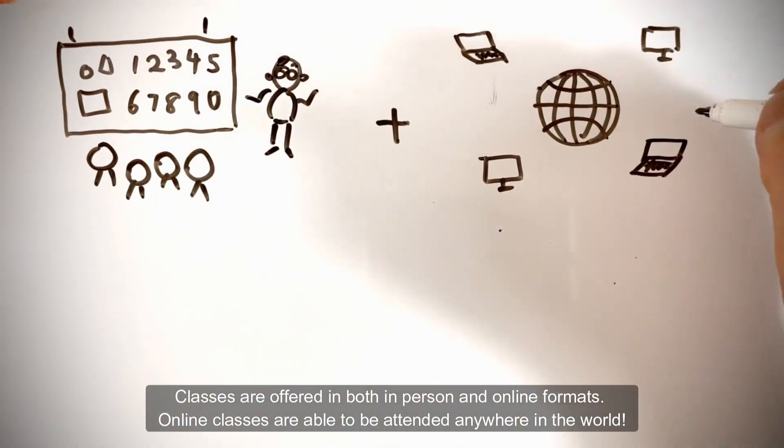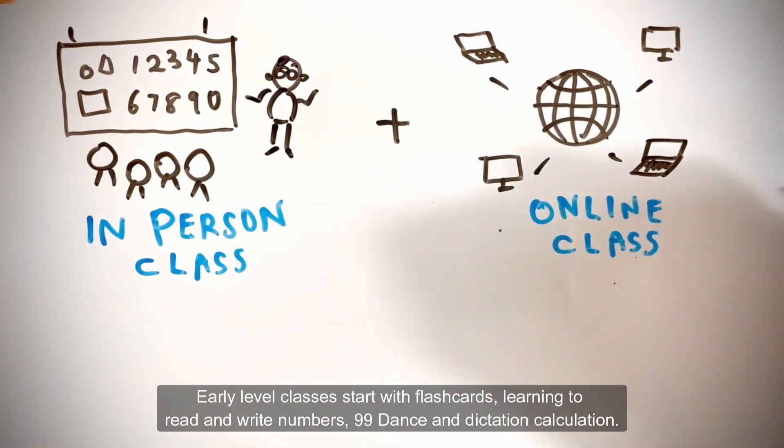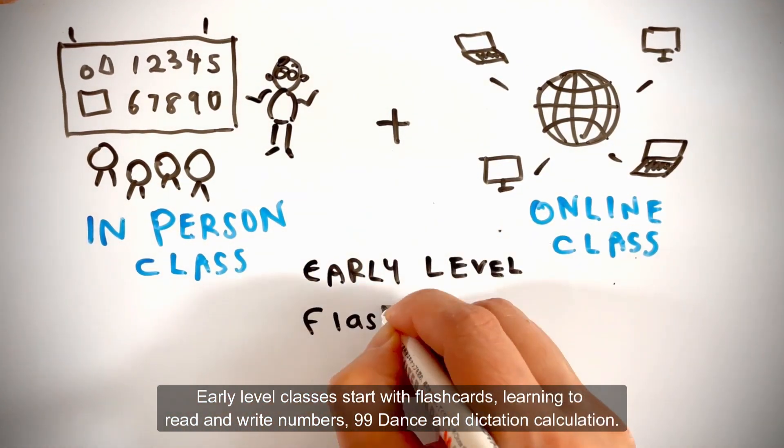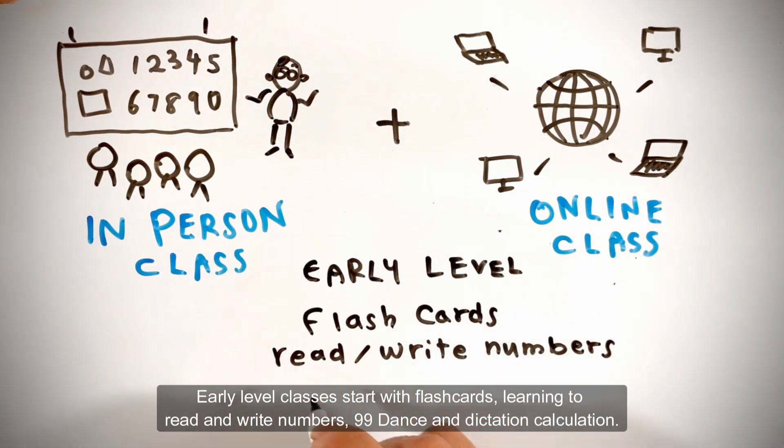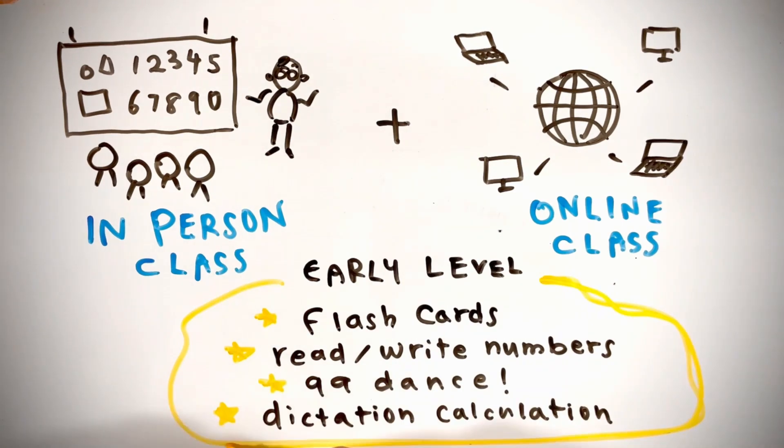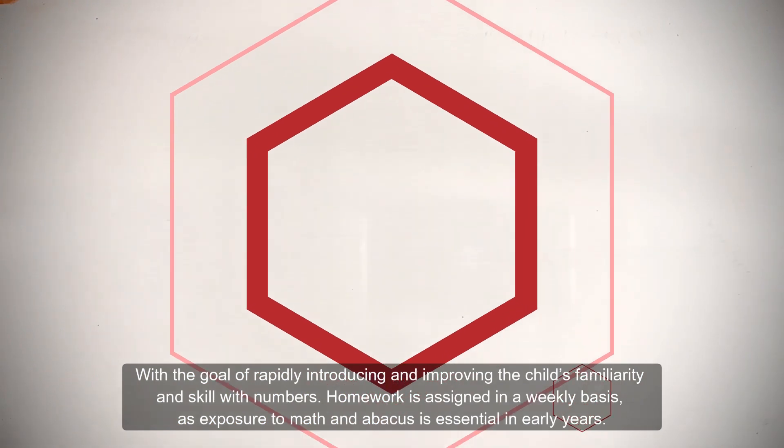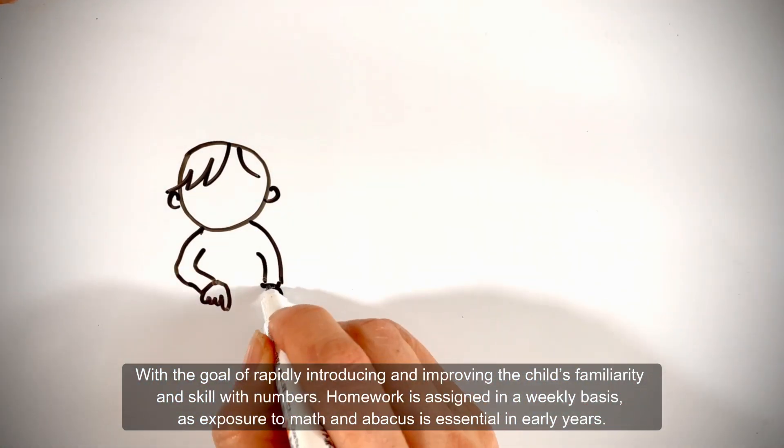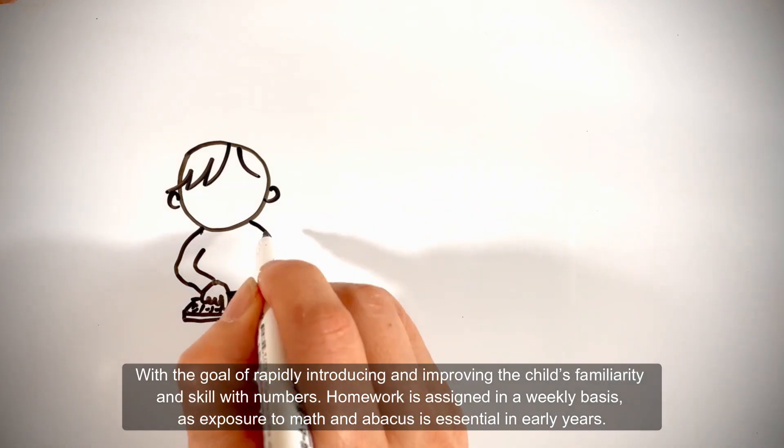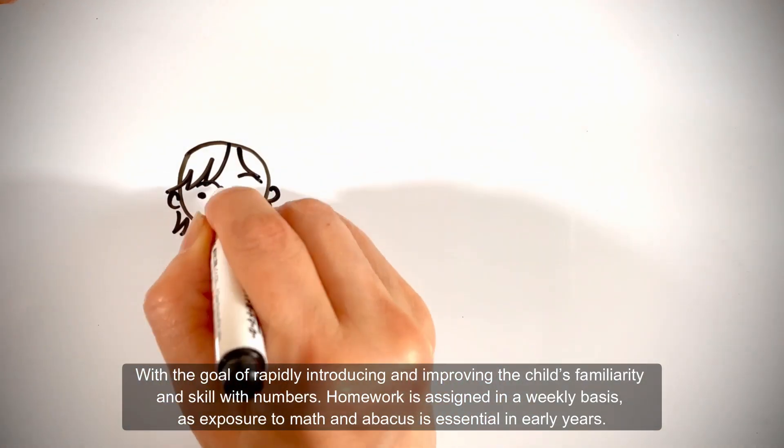Early level classes start with flashcards, learning to read and write numbers, 9-9 dance and dictation calculation. With the goal of rapidly introducing and improving the child's familiarity and skill with numbers, homework is assigned on a weekly basis as exposure to math and Abacus is essential in early years.